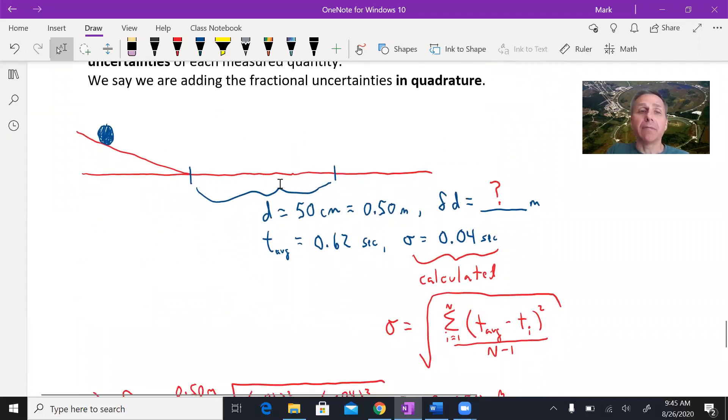So a real simple experiment that a lot of physics classes do for speed is you just roll something off a ramp. On the tabletop, you measure off a distance. That's your d. Let's say it's half a meter.